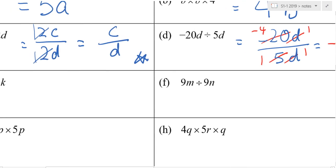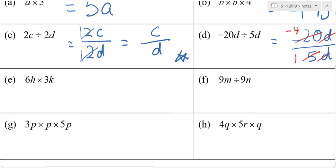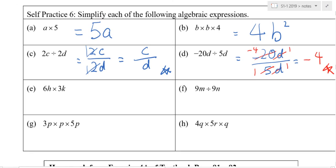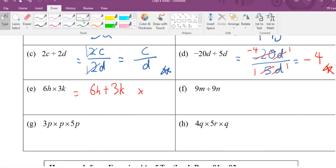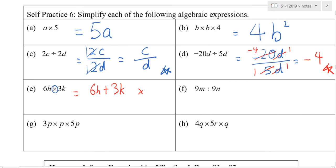What about 6H? 1, 2, 3. Abish, what's the answer? 6H plus 3K. Wrong. Now, why is it wrong? It's because you changed the question. The question asked multiply, you changed to plus.